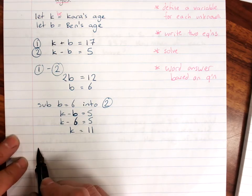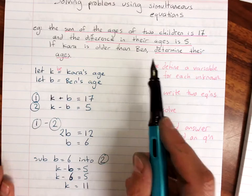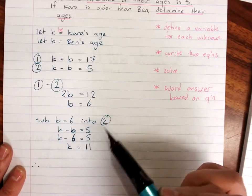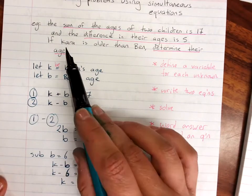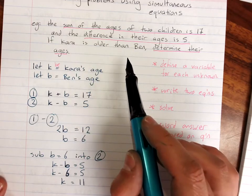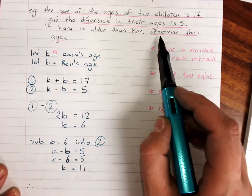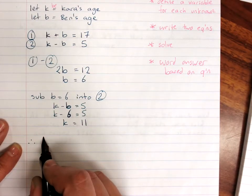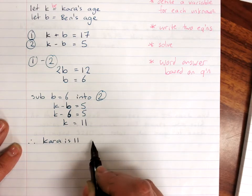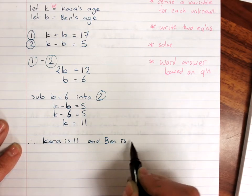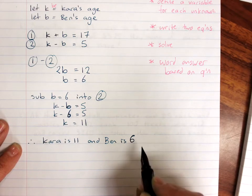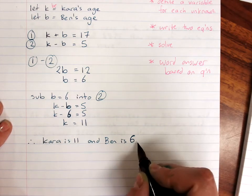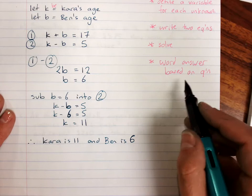But when you present your solution, your question was determine their ages. Don't say one is... what are they? They're 6 and 11. Don't say one is 6, one is 11. You have to be very clear. Kara is this age. Ben is this age. And since it said what are their ages, you must say very clearly that answer. Therefore, Kara is 11 and Ben is 6. I almost got the wrong answer. If you were being really explicit, you'd probably say 11 years old and 6 years old. So a word answer based on the question.